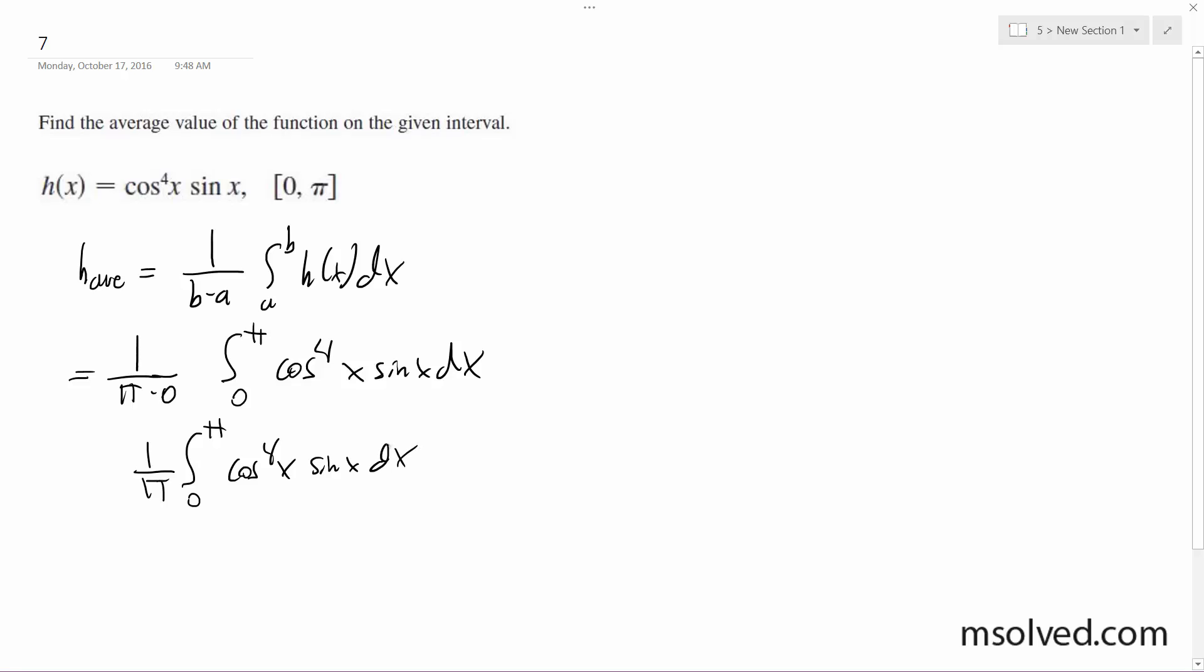All right, important part here is we got to find out what we're going to use to substitute. So we're going to let cosine of x equal t, negative sine of x dx equal dt, and then sine of x, well, doesn't matter.